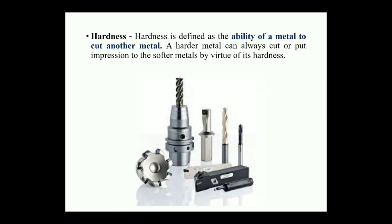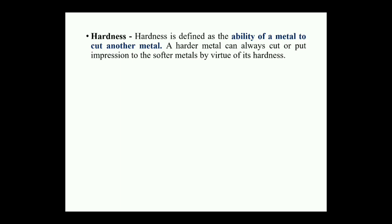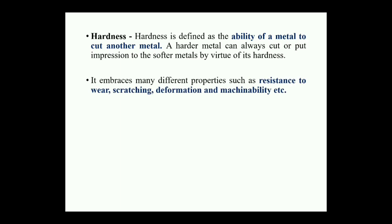Hardness is defined as the ability of a metal to cut other materials, or technically, resistance to wear, scratches, and penetration. For cutting tools, hardness is the essential part — the machining tool material must be harder than the workpiece material. Hardness embraces many different properties such as resistance to wear, scratching, deformation, and machinability.